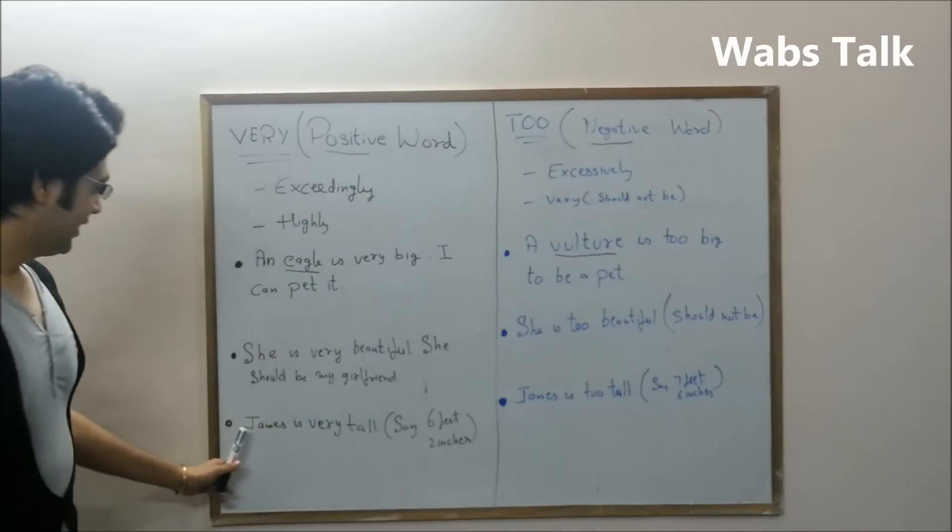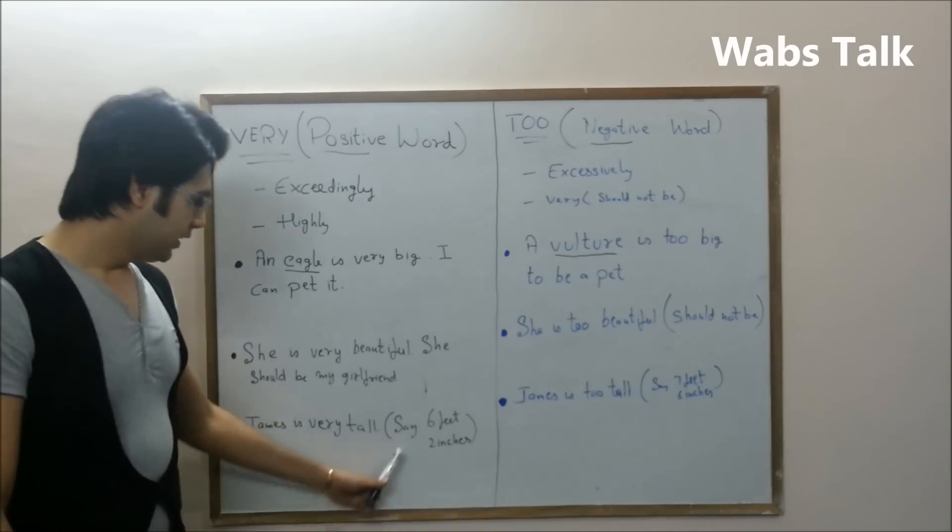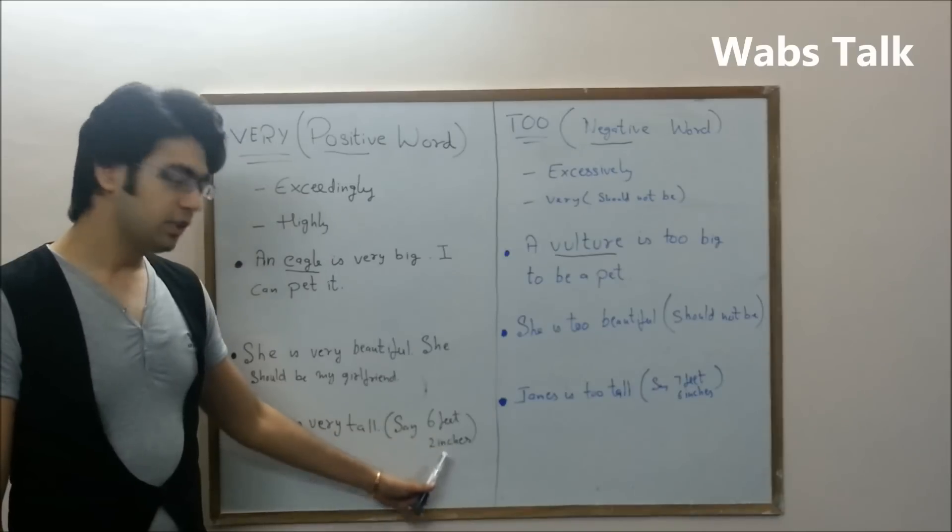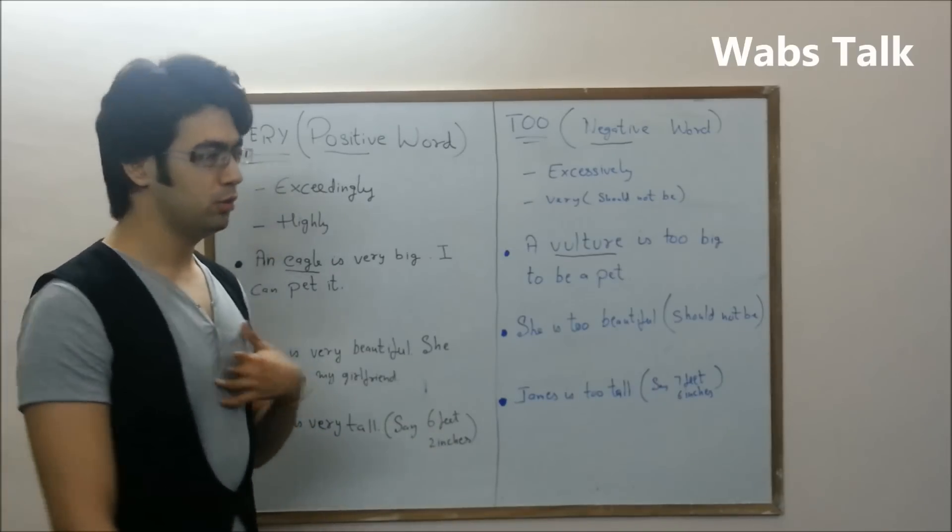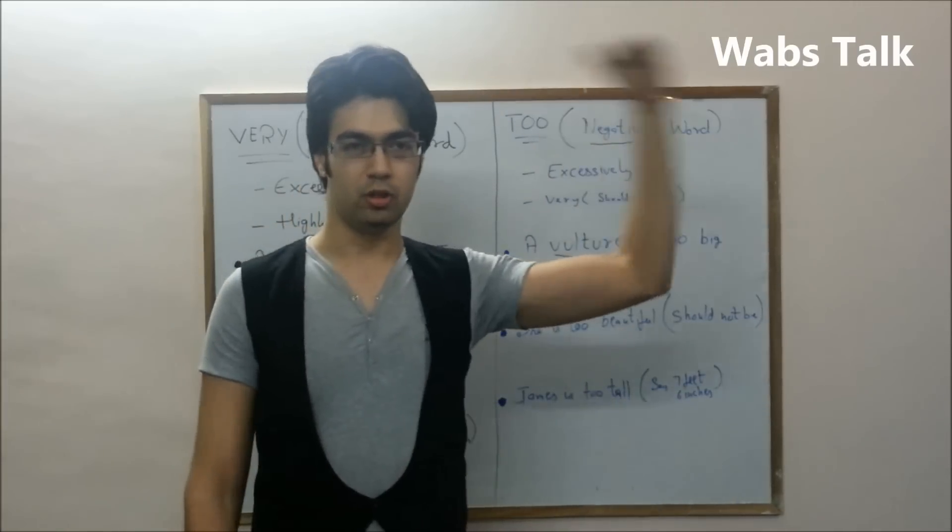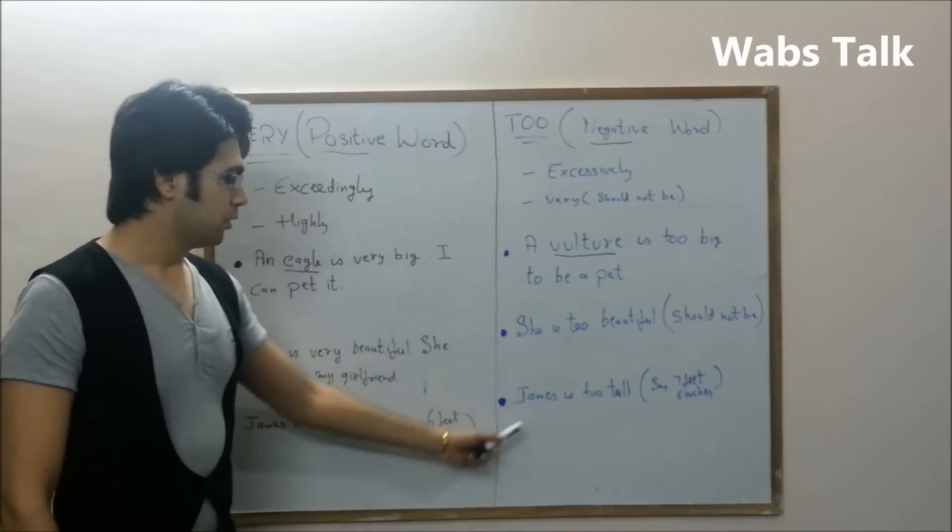Next, James is very tall. Let's say James is 6 feet 2. Now, I'm also 6 feet 2. If James is 6 feet 2, he's very tall. His height is a very good height.